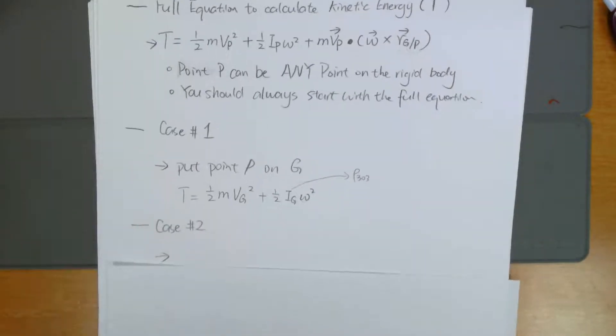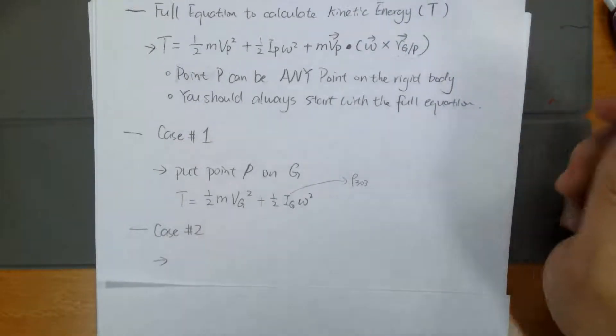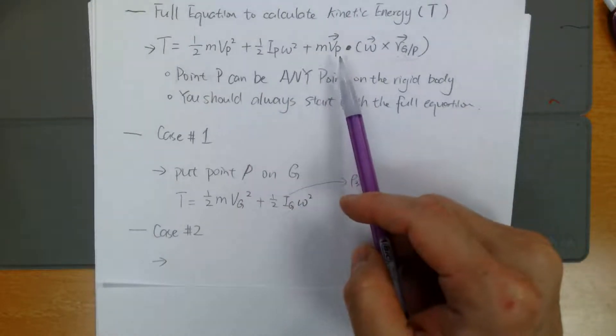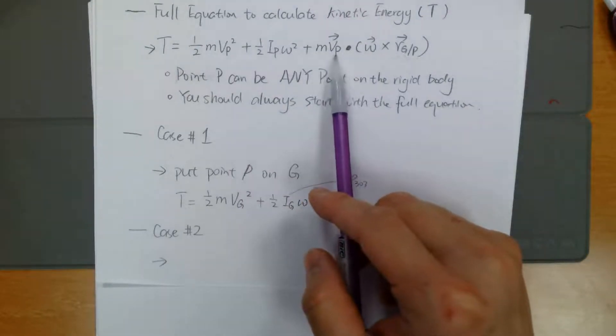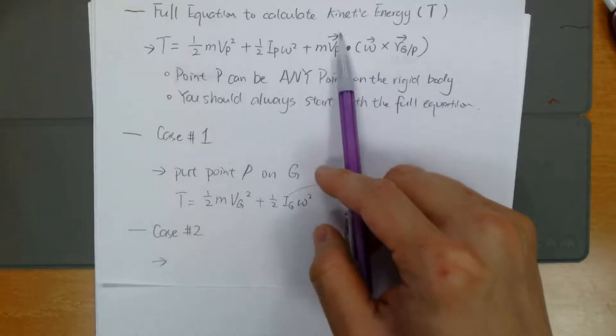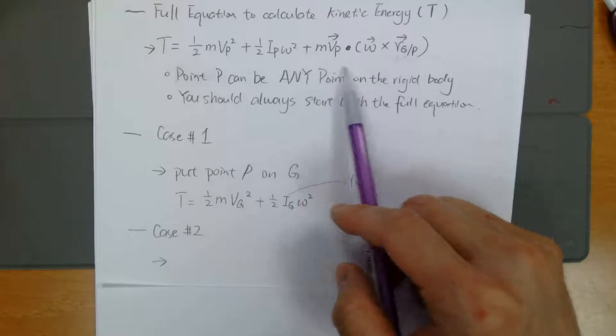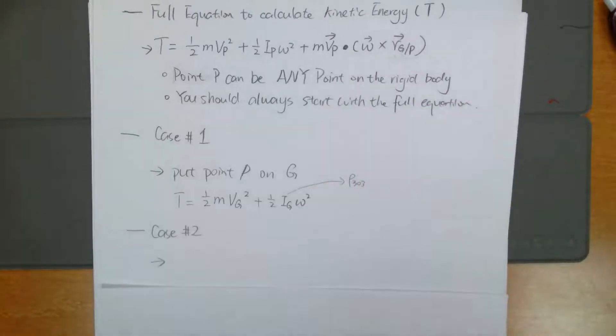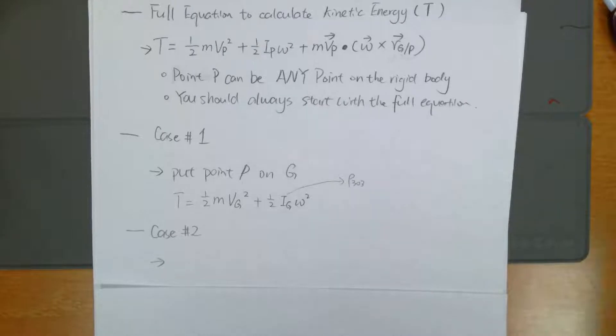We have a second case. The second case would be if you can find a point that gives you zero velocity, so make this guy equals zero. In that case, this whole third term is going to be zero.